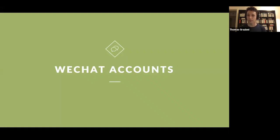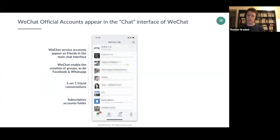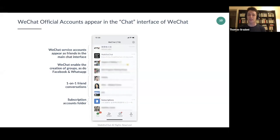Brands can be visible on WeChat by creating WeChat Official Accounts — WeChat brand accounts. They appear in the chat section, not on the timeline like Facebook pages. WeChat official accounts send messages received similarly to a message from a friend. There are two main types used for marketing: service accounts, which appear directly like friends, and subscription accounts, which appear in a nested folder.